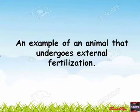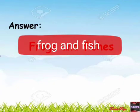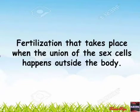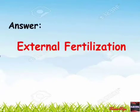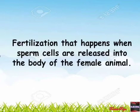What is the sex cell of a male animal? Can you give an example of an animal that undergoes external fertilization? The answer is frog and fish. Fertilization that takes place when the union of sex cells happens outside the body — the answer is external fertilization.